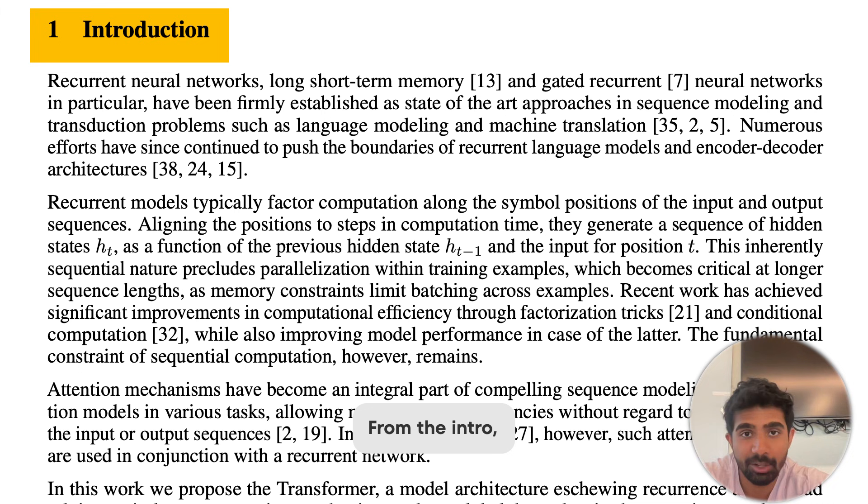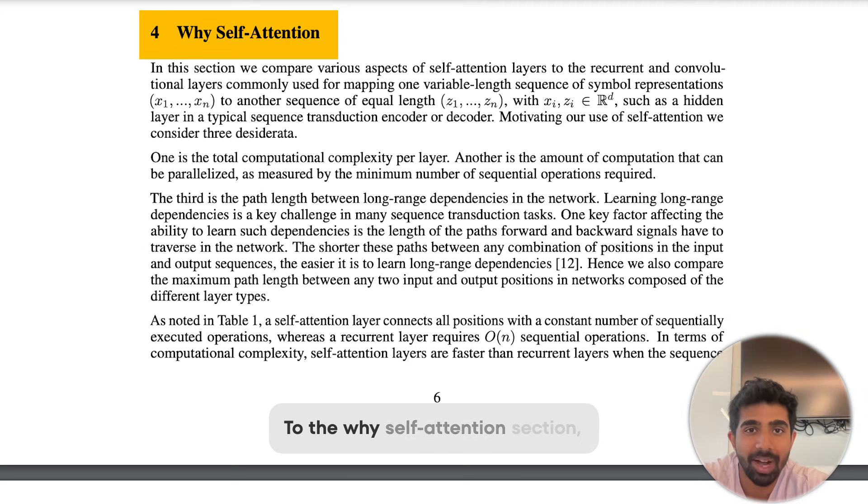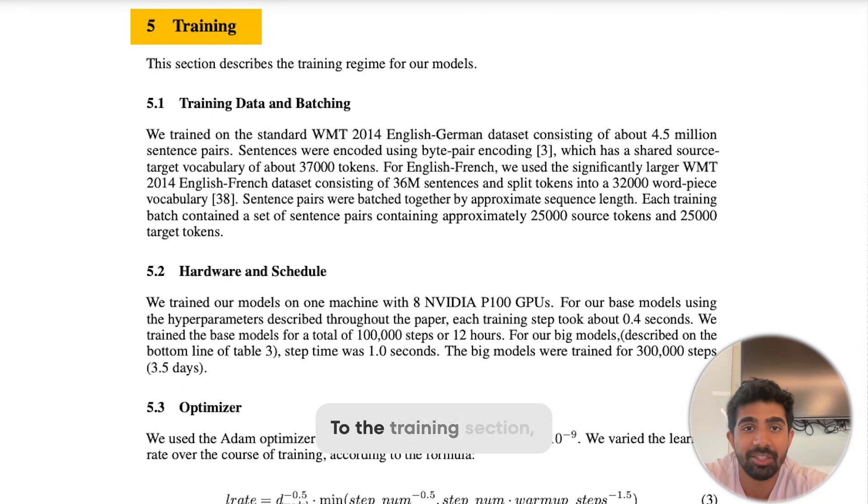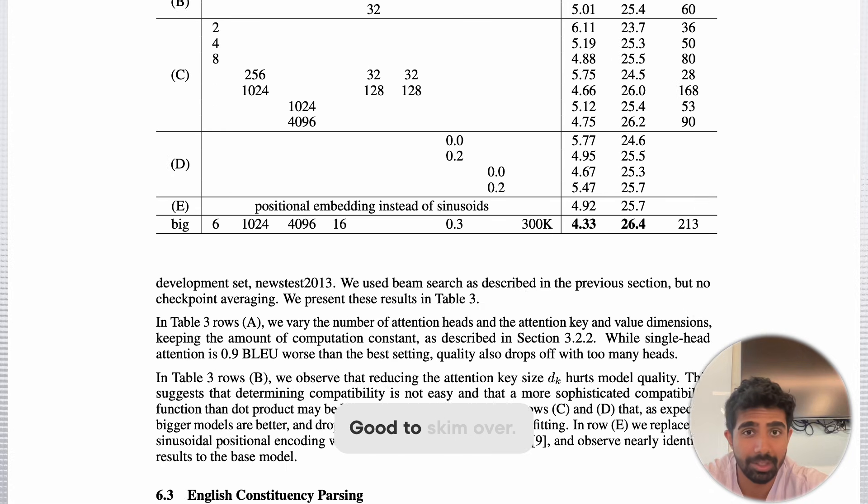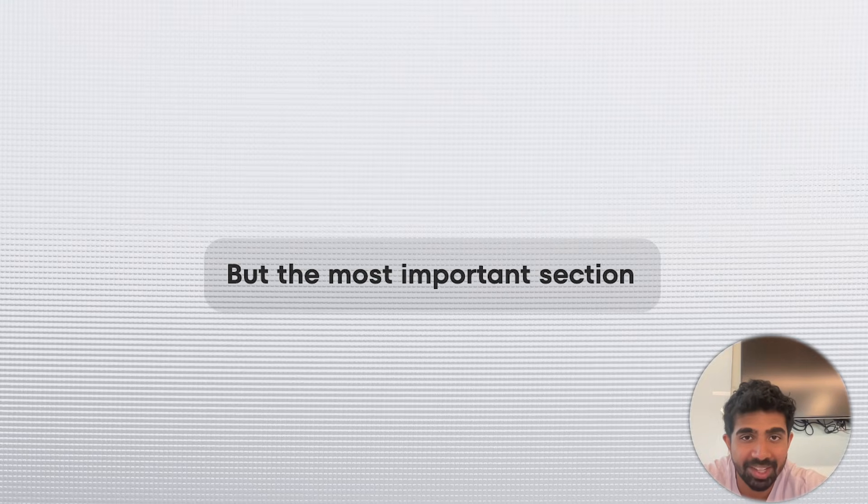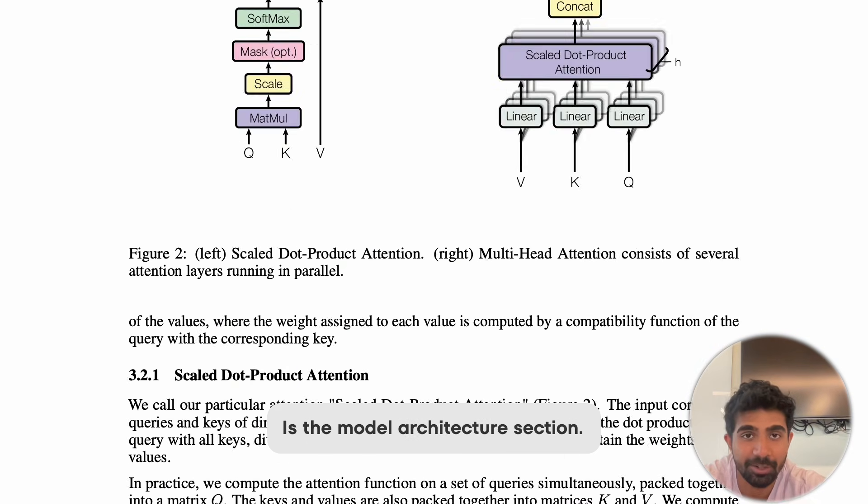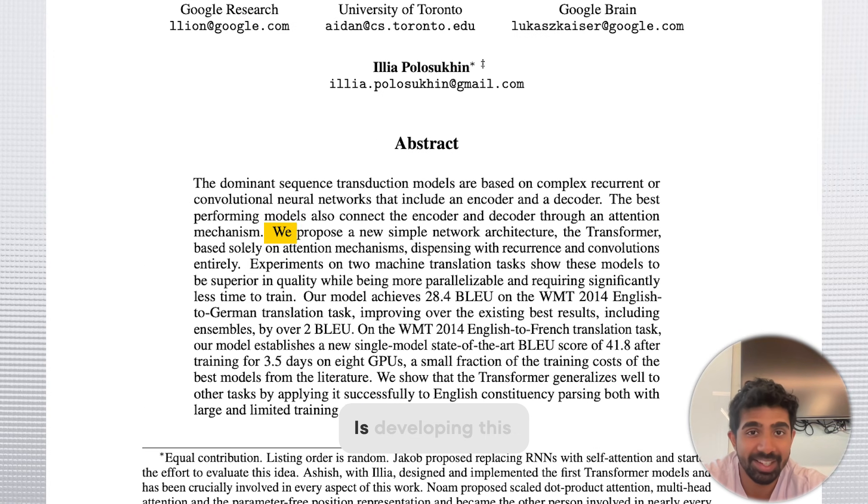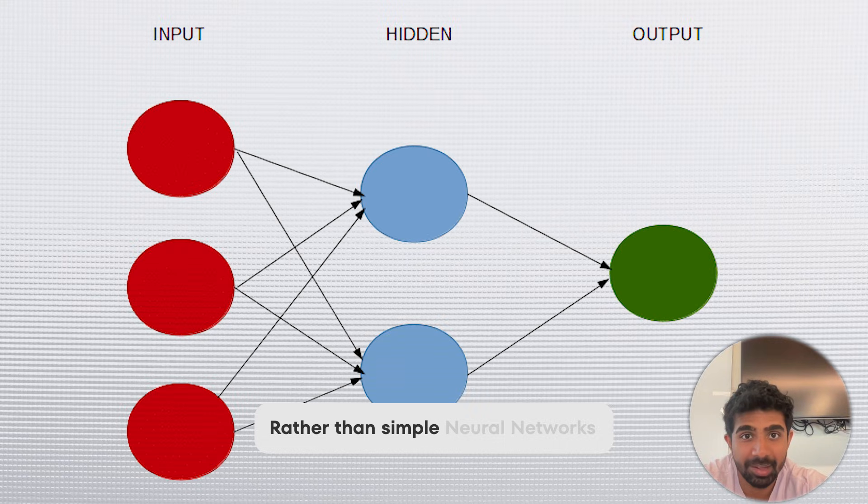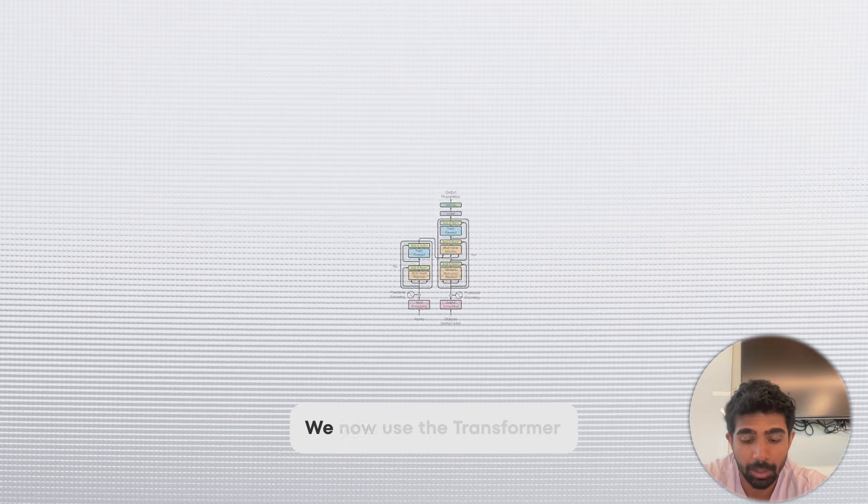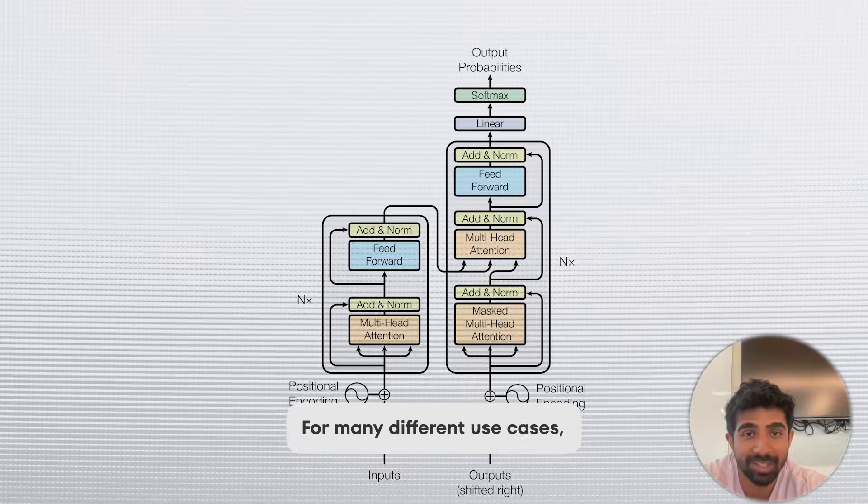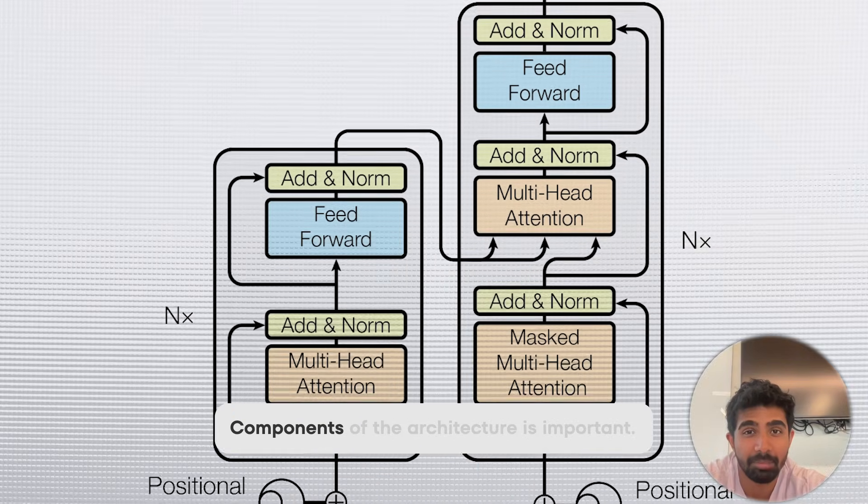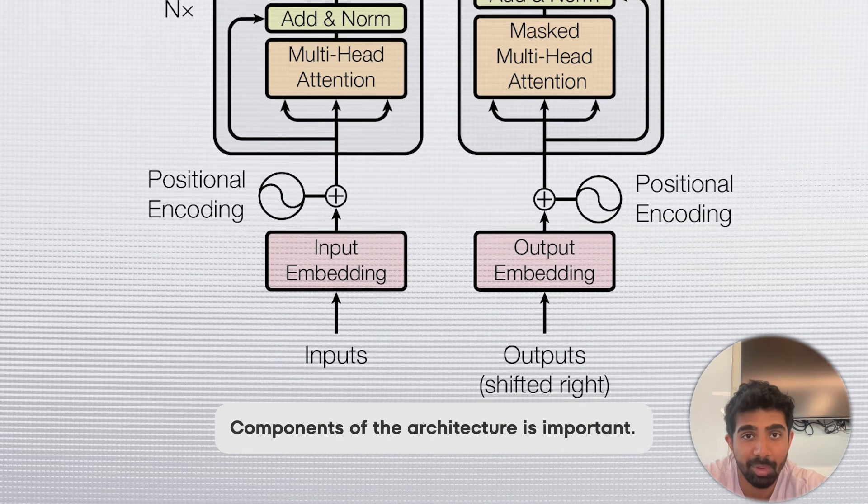Honestly, every section of this paper is worth reading, from the intro, to the background, to the why self-attention section, to the training section, and even the results are good to skim over. But the most important section is the model architecture section. This is an architecture paper. The researcher's main contribution is developing this new model architecture. Rather than simple neural networks like this one, we now use the Transformer for many different use cases, and understanding the different components of the architecture is important.